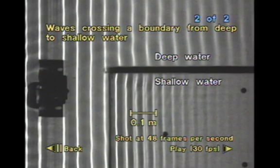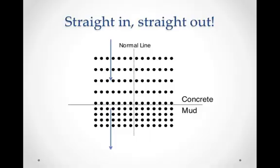Here's our ripple tank showing the difference in speeds between the deep water and the shallow water. The wavelength ratio equals the speed ratio. You can see the longer wavelengths up top in the deep water where it's going faster, and the shorter wavelengths down below in the shallow water. The wavelength ratio equals the speed ratio.